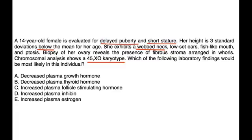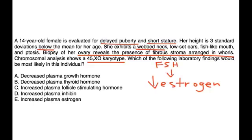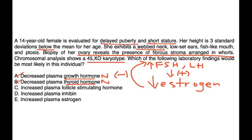In Turner Syndrome, because of gonadal dysgenesis, you get low levels of estrogen. FSH and LH are responsible for helping increase estrogen levels. If estrogen levels are chronically low, this negative feedback does not occur, so FSH and LH levels rise. Plasma levels of growth hormone and thyroid hormone are typically normal. Increased plasma FSH (follicle stimulating hormone) — yes, that is true.